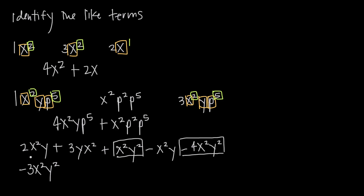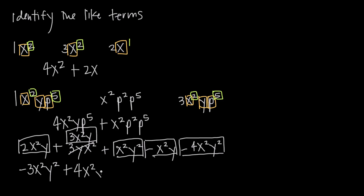Now let's look for the terms where we have x squared and y. Here we have x squared y — x squared, y to the first. And here, even though I have y times x squared, we can use the commutative property to say this is actually 3x squared y — we can switch the order because they're multiplied together. So this term is also x squared y, giving us 3x squared y. And here I have minus 1x squared y. Adding two of them plus three of them minus one of them gives me four. So the final answer is 4x squared y minus 3x squared y squared.